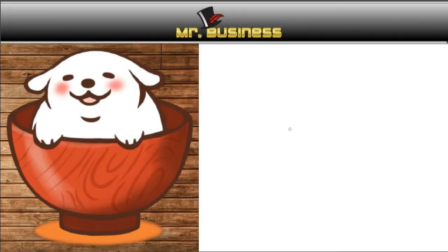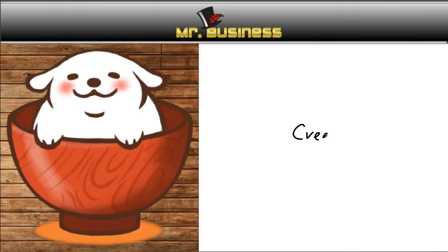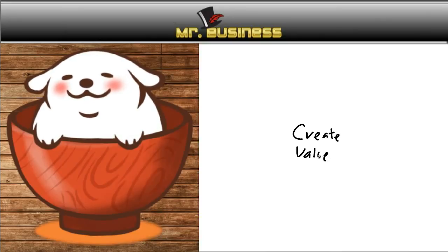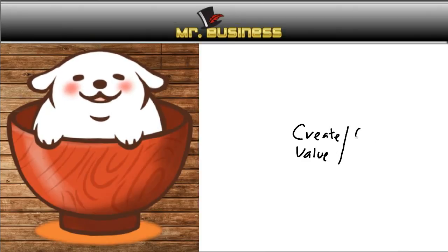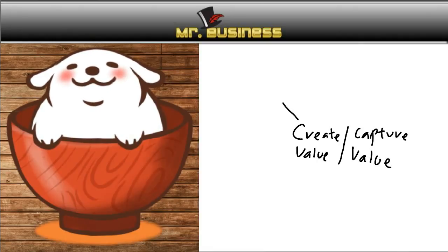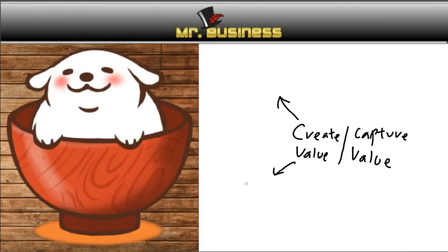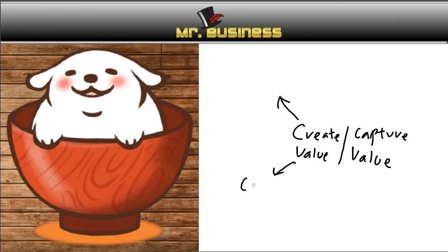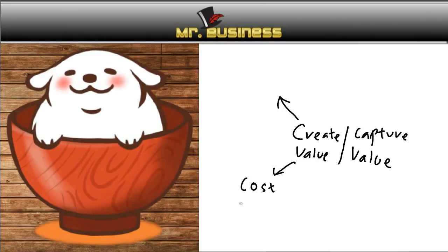So let's go ahead and build ourselves a business model. The core is create value — we're going to put 'create value' in the middle. We want to create value, and after that we have our capture value. This is the core. So if this is the core, what comes from it? First thing: if you're going to create value, you're going to have some costs. The cost to create value — this is going to be very simple.